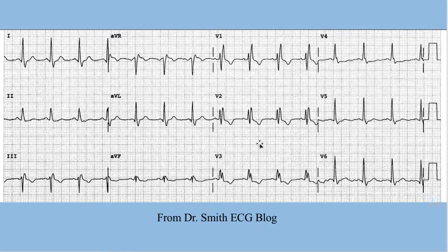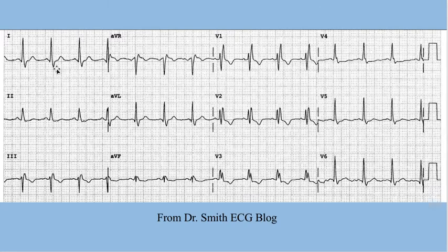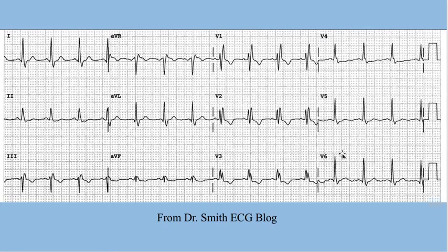Something else that could potentially be normal for right bundle branch block is in the lateral leads V6, V5, AVL, and I. You might encounter a big bulky T wave with ever so slight ST segment elevation in these leads when subsequent to a large slurred S wave — that could very well be a normal variant. It should be assumed to be new until proven otherwise in the right clinical context of acute coronary syndrome. Now, a lethal combination with right bundle branch block is a left anterior fascicular block appreciated here in the frontal plane.